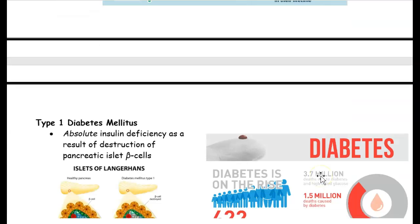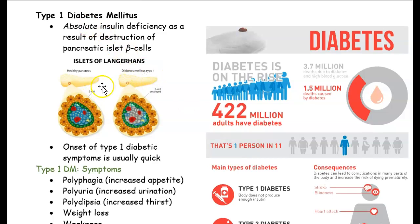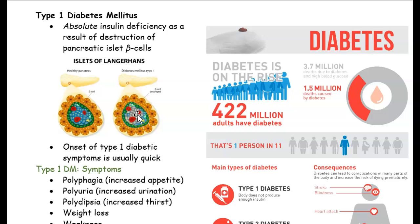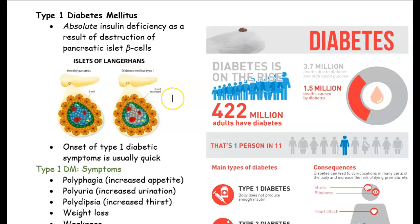With type 1 diabetes, in a normal healthy person we have a pancreas. One type of cell in the pancreas is the beta cell, and beta cells secrete and release insulin. But when you have type 1 diabetes, the beta cell is destroyed — you can see it's grayed out — and when the beta cell is destroyed, no insulin is made. We need insulin to give sugar to our cells, so type 1 diabetes is absolute insulin deficiency. Your beta cells in your pancreas are not producing insulin.